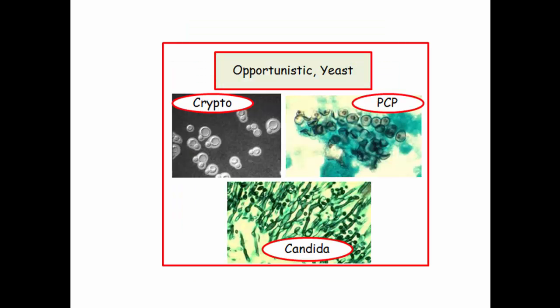Opportunistic is the buzz phrase here. The questions on these organisms, namely cryptococcus and pneumocystis, will generally be described in a patient with HIV who has a low CD4 count. Candida is grouped in this section for reasons I'll describe later.